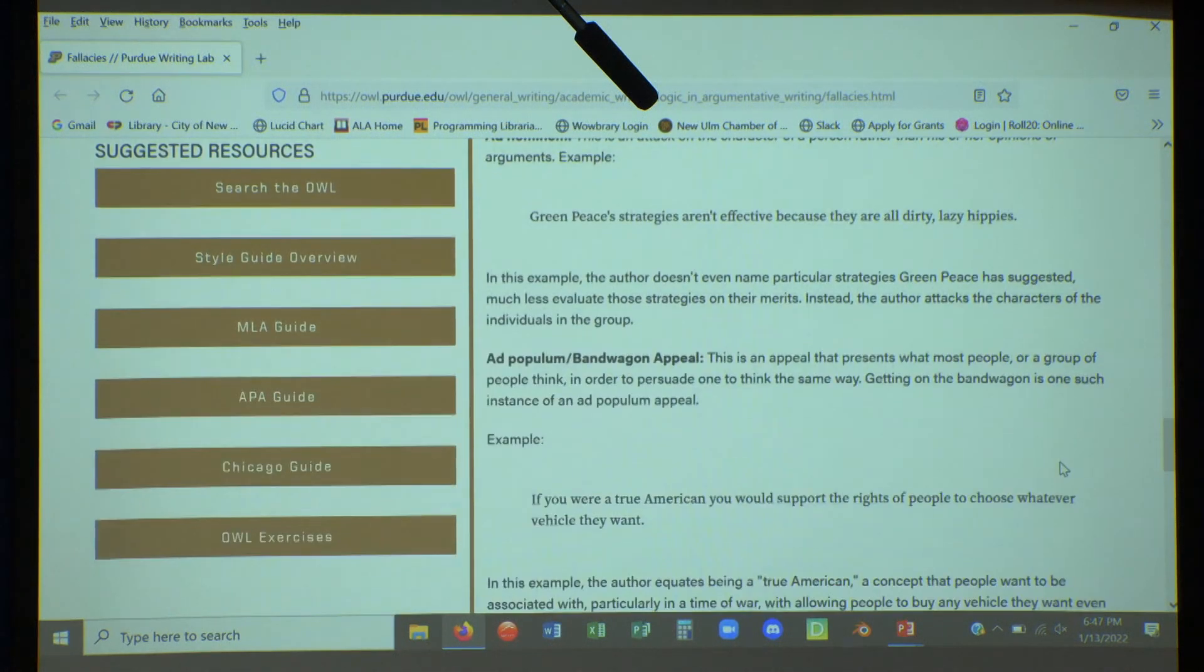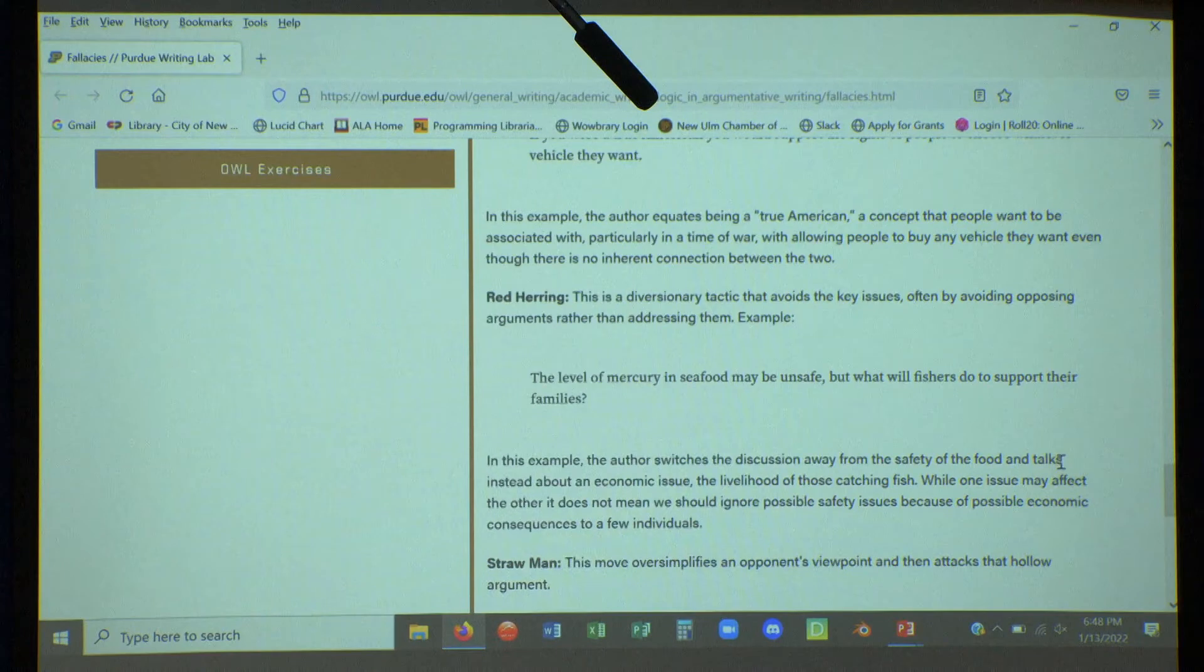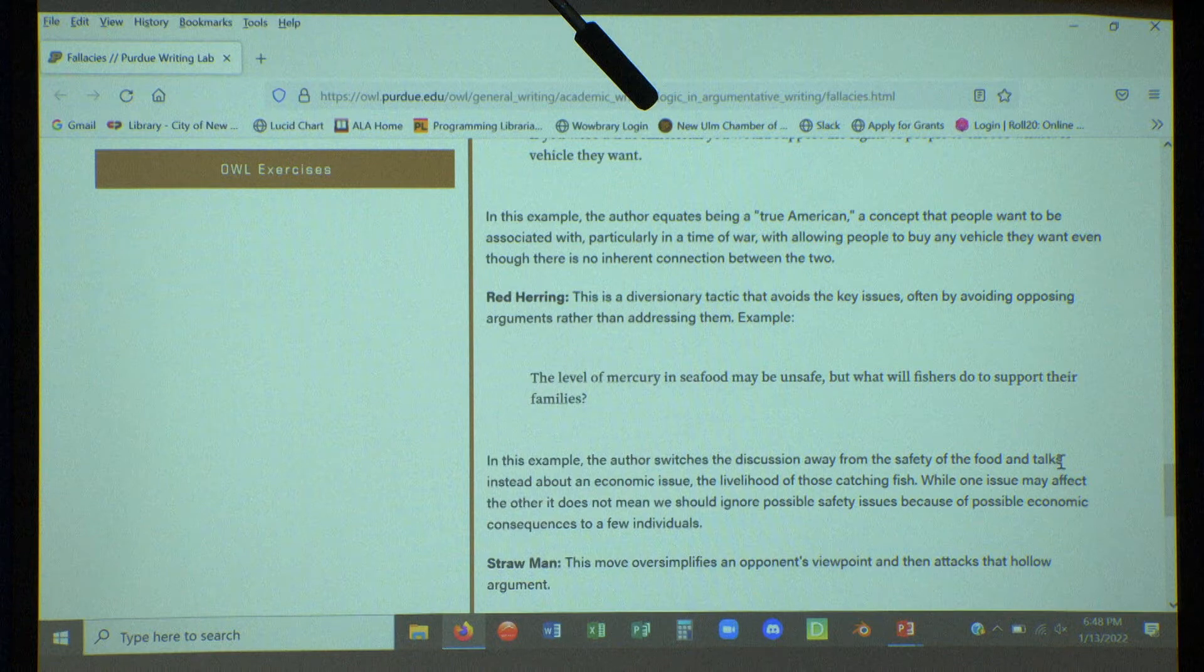We're seeing this next one a lot as well: ad populum, which is using societal pressure, peer pressure, guilt tripping in a way to try to say if you were really part of the group or a good person or whatever, you would believe this. And because there's all of us in this group that believe this thing, then we must be right. The majority isn't necessarily right. History's shown that many times and the majority doesn't always want what's right. Just because the majority doesn't mean that they are right.